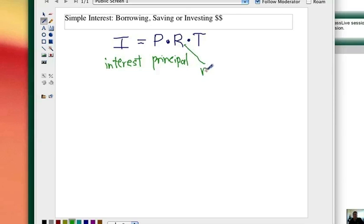R is the rate. In a standard formula like this, this is the interest rate per year. At the end of one year, what's the interest rate? And T is always in terms of time, and it's in years.